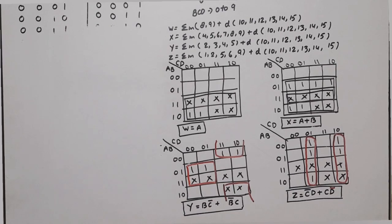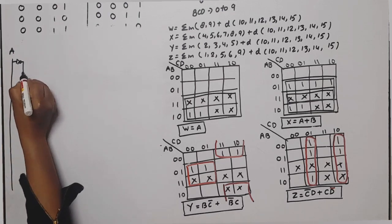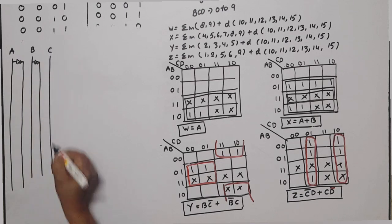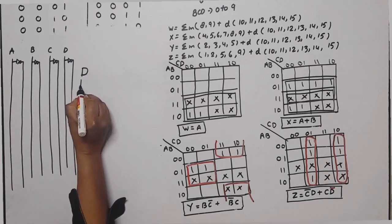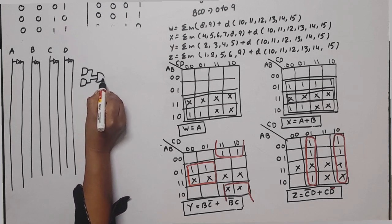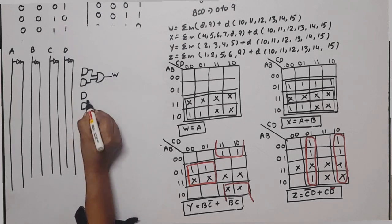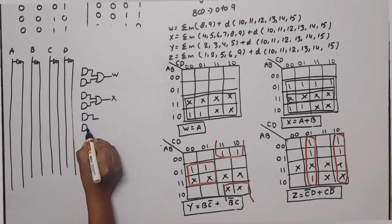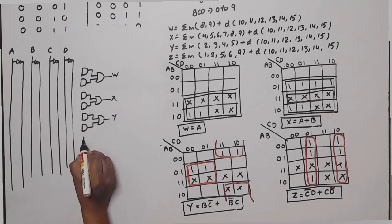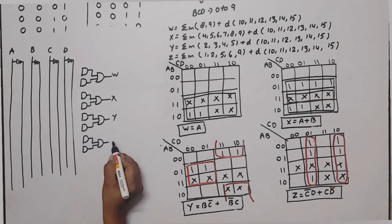PAL means Programmable Array Logic. In this case the AND array will be programmable and the OR array will be fixed. First we handle the AND array. We need to count the maximum product terms. Every output needs 2 AND gates: 2 for W, 2 for X, 2 for Y, and 2 for Z.